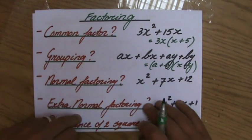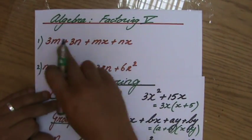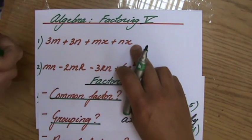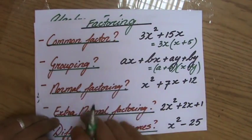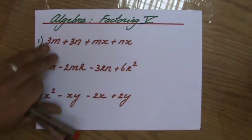So first of all, is there a common factor? I'm looking at all four terms. And when you get a little bit more experience when you're factorizing, you will notice if I have four terms, it will be grouping. Because that's the one with four terms. Okay, grouping.